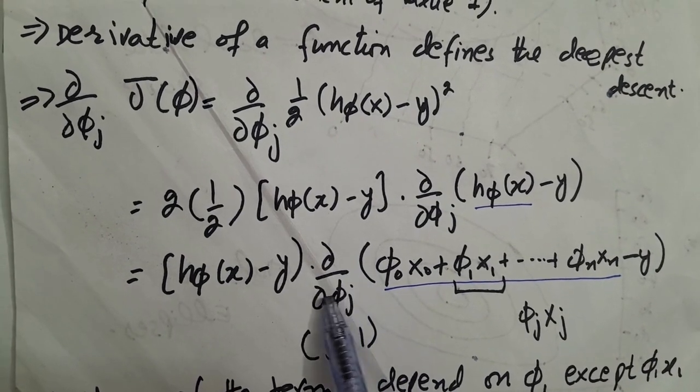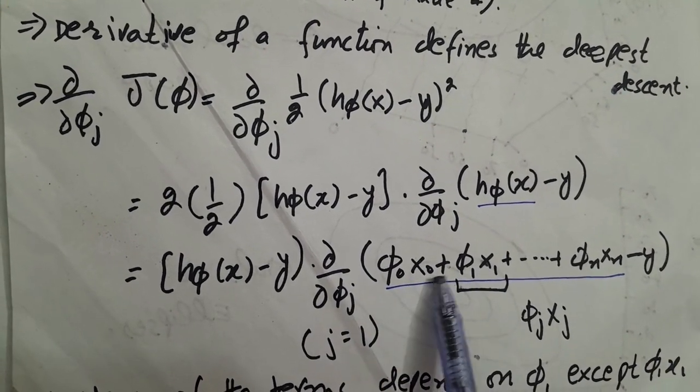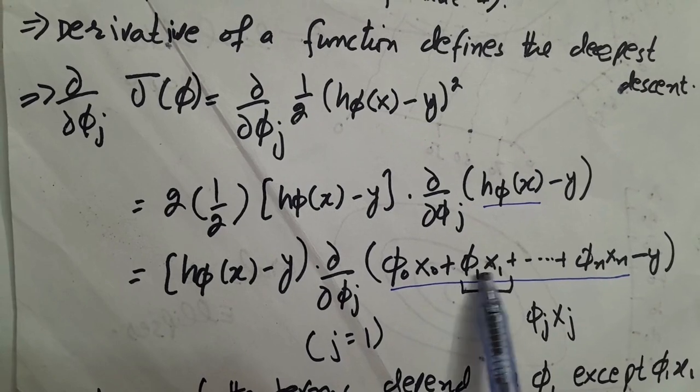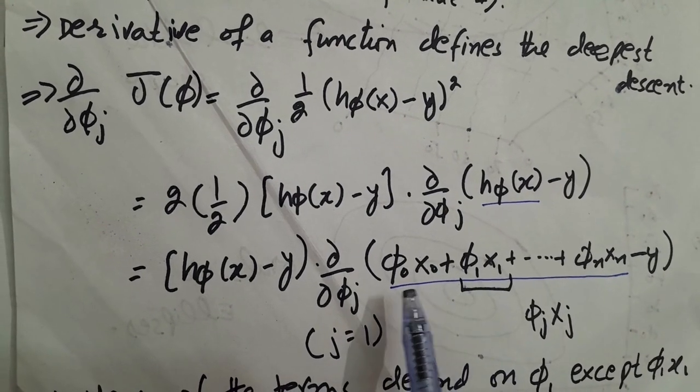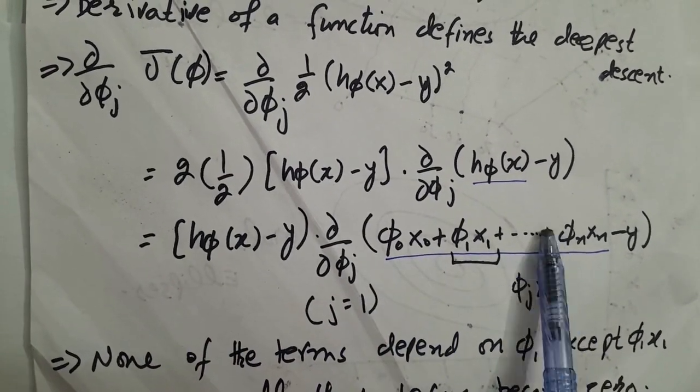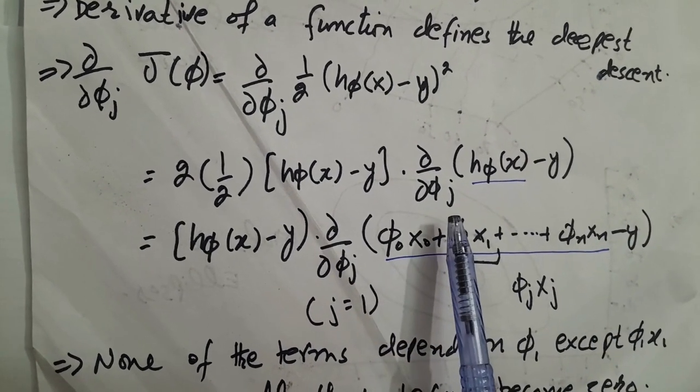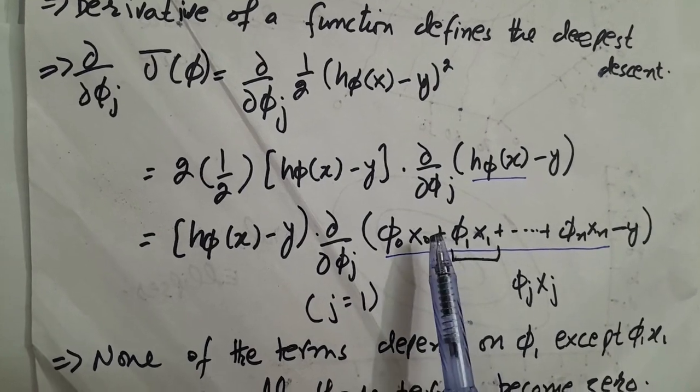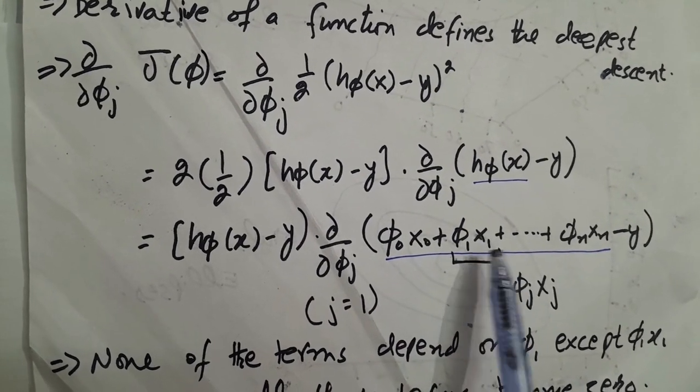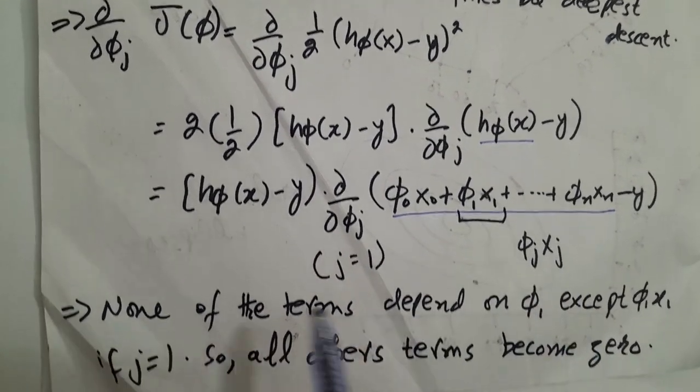Only the function which remains here. If j is equal to 1, it will remain here, so other values are constant, so they will get zero value. At the final step, we only get this function. Now for generalizing, if we take it as phi j x j.